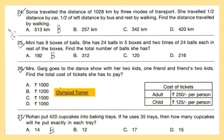Question 24: Sonia traveled a distance of 1028 km by 3 modes of transport. She traveled 1/2 the distance by car, 1/2 of the left distance by bus, and the rest by walking. Find the distance traveled by walking.